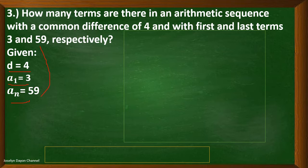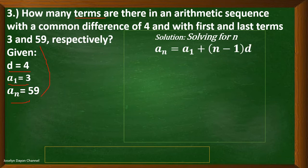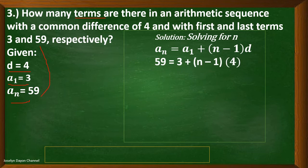We are going to solve for the value of n since we are asked to determine how many terms are in the given arithmetic sequence. Using the n-th term formula: a sub n equals a sub 1 plus the quantity of n minus 1 times d. Substituting: the last term is 59, first term is 3, and d is 4.